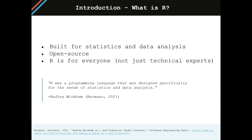R is a statistical programming language used commonly for data analysis across a wide array of disciplines and industries. It's often preferred over similar languages for its robust support of statistical analysis, its beautiful graphics, and its open source nature.